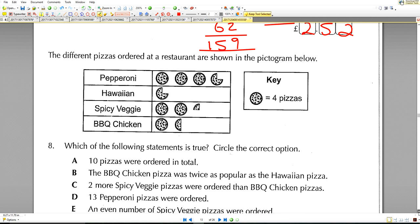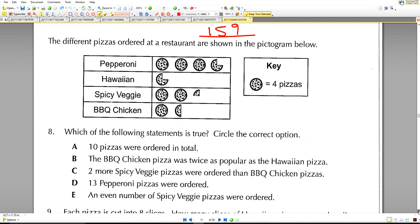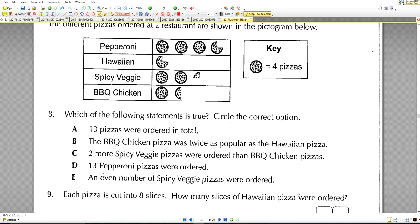The different pizzas ordered at a restaurant are shown in the pictogram below: pepperoni, Hawaiian, spicy veggie, barbecue chicken. Here's the key, so each complete pizza represents four pizzas. That's 4, 8, 12, and that's going to be three quarters of 4, which is 3.